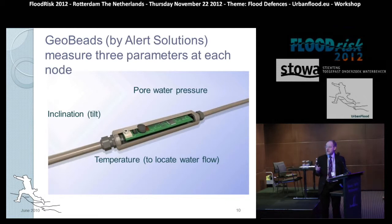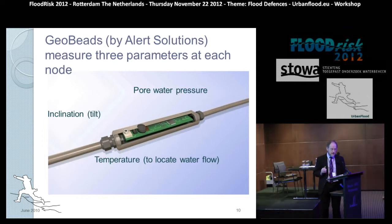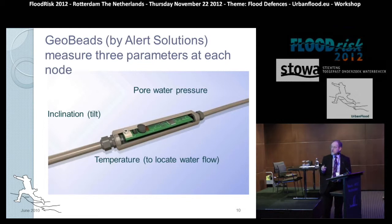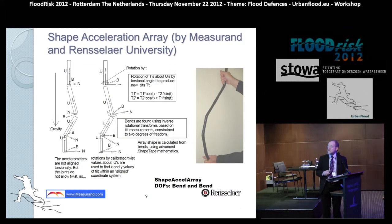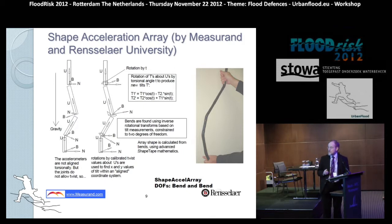The instruments selected were geo-beads, which measure pore water pressure, inclination, and temperature using MEMS — microelectronic devices buried within them. The shape acceleration array uses a similar kind of system but integrates displacements using shape tape mathematics.